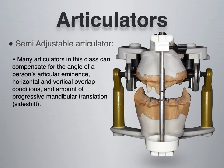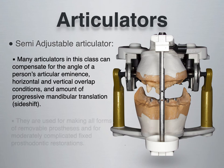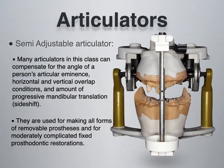When it comes to semi-adjustable articulators, many in this class can compensate for the angle of a person's articular eminence — that's right by the condyle. You can see on this metal dial how there are numbers that range all the way to 30 degrees. They can also replicate horizontal and vertical overlap conditions and the amount of progressive mandibular translation, also known as side shift. These are used for making all forms of removable prosthetics and for moderately complicated fixed prosthodontics as well.